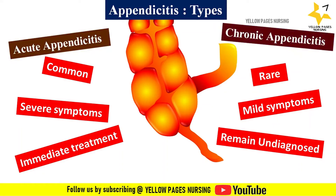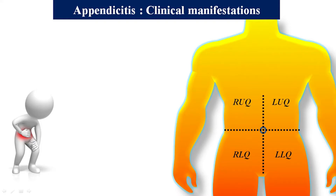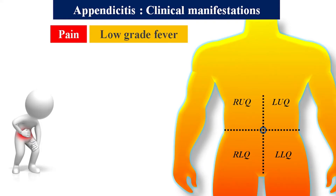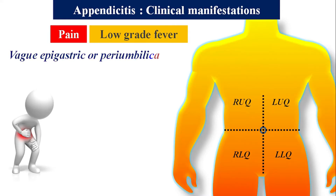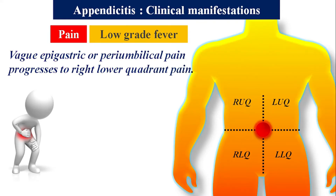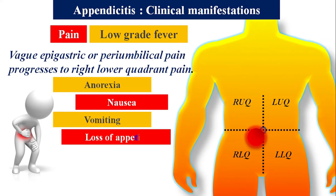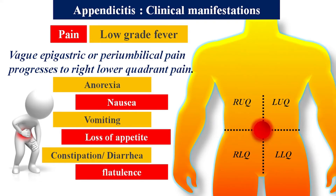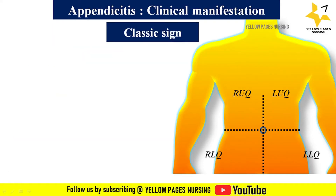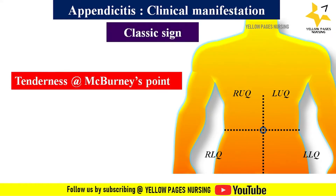The clinical manifestations of appendicitis begin with pain and a low-grade fever. Vague epigastric or periumbilical pain progresses to right lower quadrant pain. The pain may feel like a cramp at first and may worsen when coughing, sneezing, or moving. Other symptoms include anorexia, nausea, vomiting, loss of appetite, constipation or diarrhea, and flatulence. A classical sign is tenderness at McBurney's point.